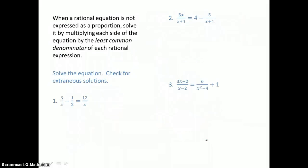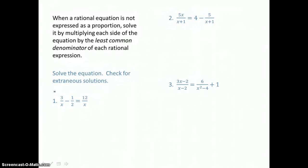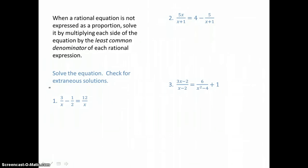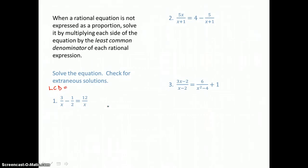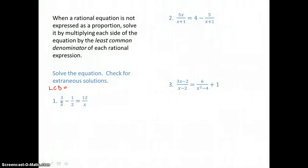Here we have some more rational equations. These are not proportions — they have three rational expressions or terms in them, so we're going to use a different method. We're going to need the least common denominator, or the least common multiple of the denominators, in order to multiply both sides by that value and get rid of the denominators. We find the LCD by looking at each denominator.